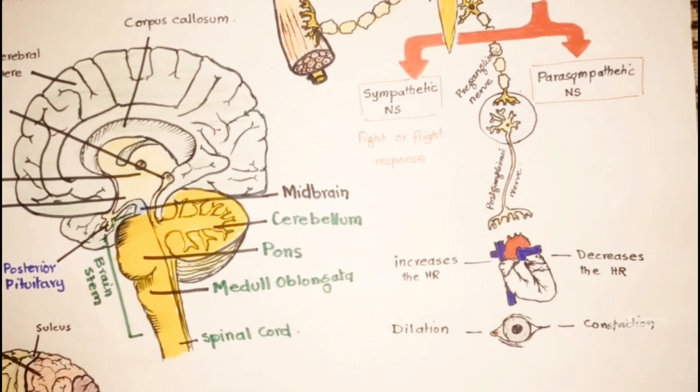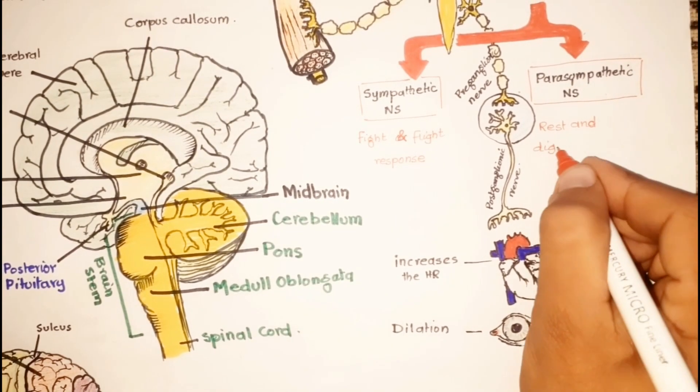On the opposite side, the parasympathetic nervous system is more active when we are eating and resting, and thus it is sometimes referred to as the rest and digest response.